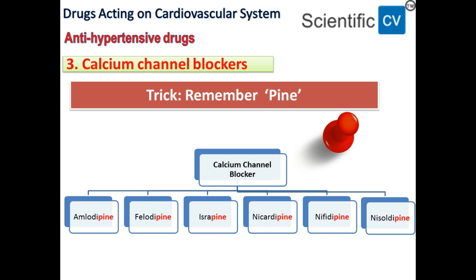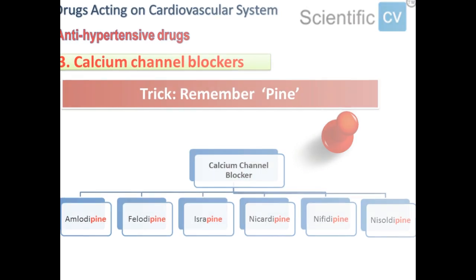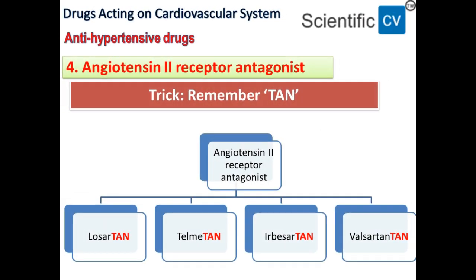The next class is angiotensin 2 receptor antagonists. The trick is to remember '-sartan'. The drugs will be losartan, telmisartan, irbesartan, and valsartan. So to remember this class of drugs, remember the suffix '-sartan'.